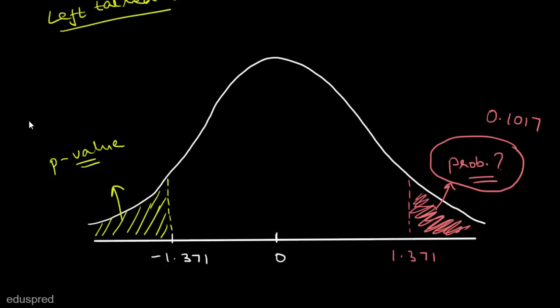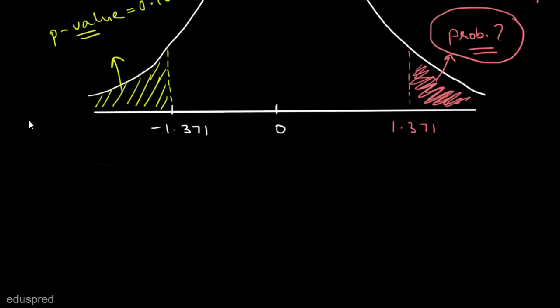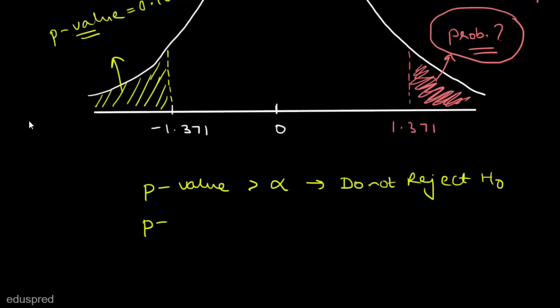Now with the p-value in hand, to decide whether to reject the null hypothesis or not, we compare the p-value with alpha. The rule is: if the p-value is greater than alpha, we do not reject the null hypothesis. If the p-value is less than alpha, we reject the null hypothesis.